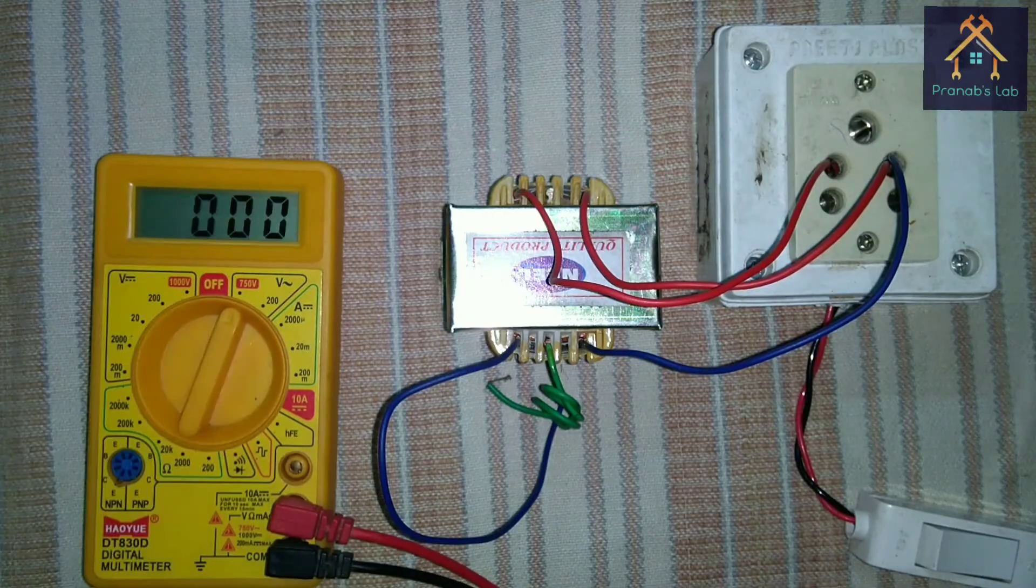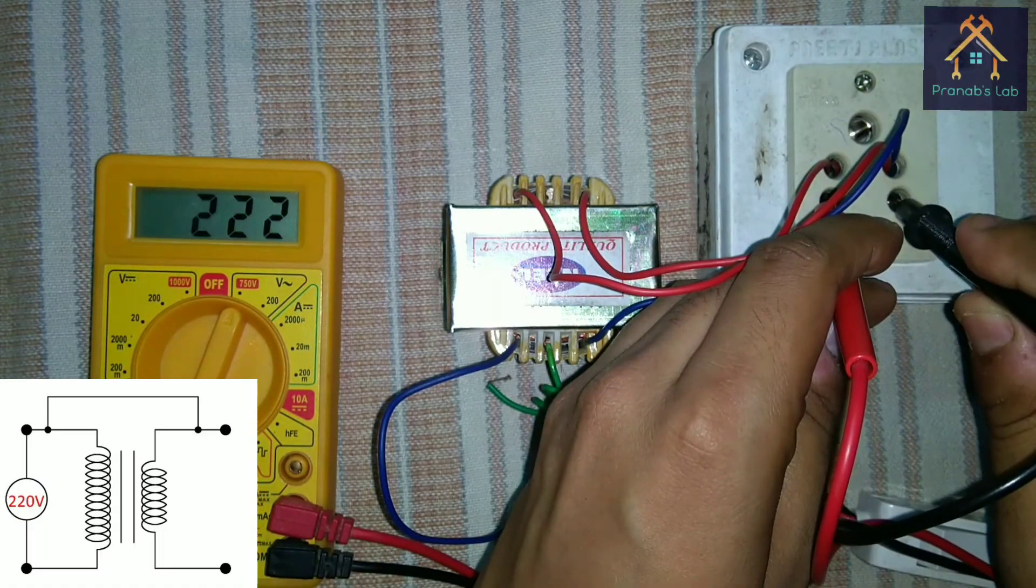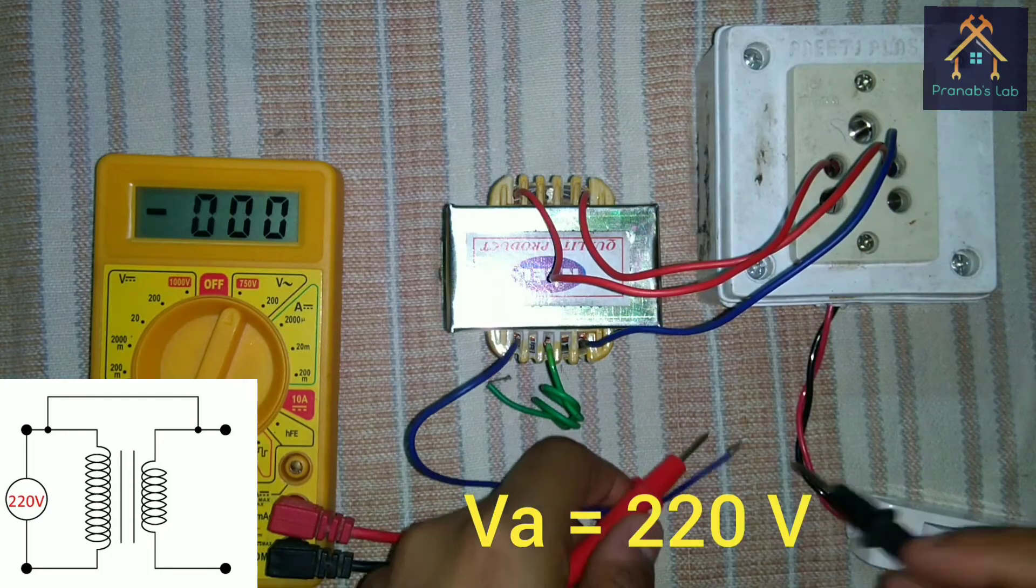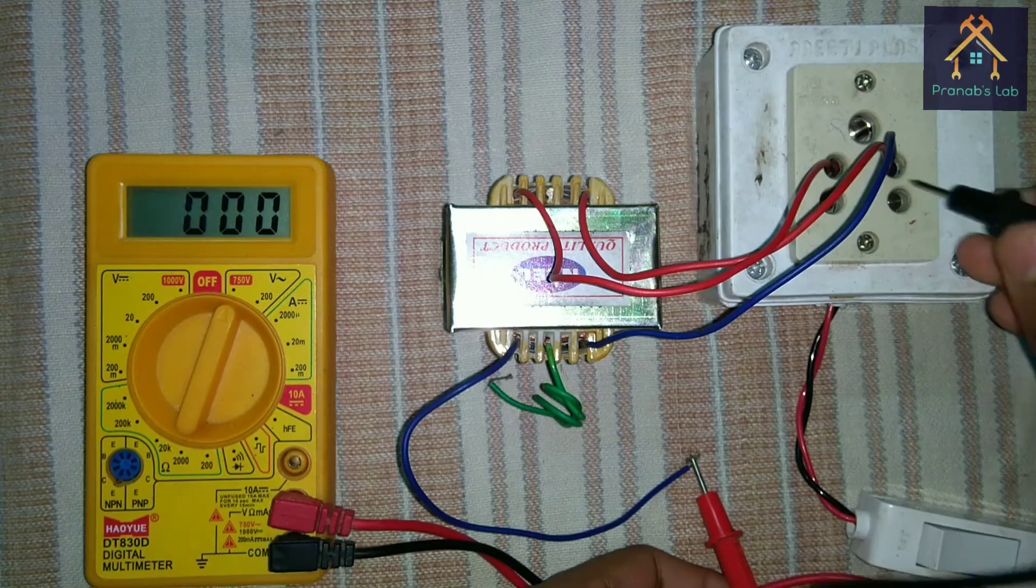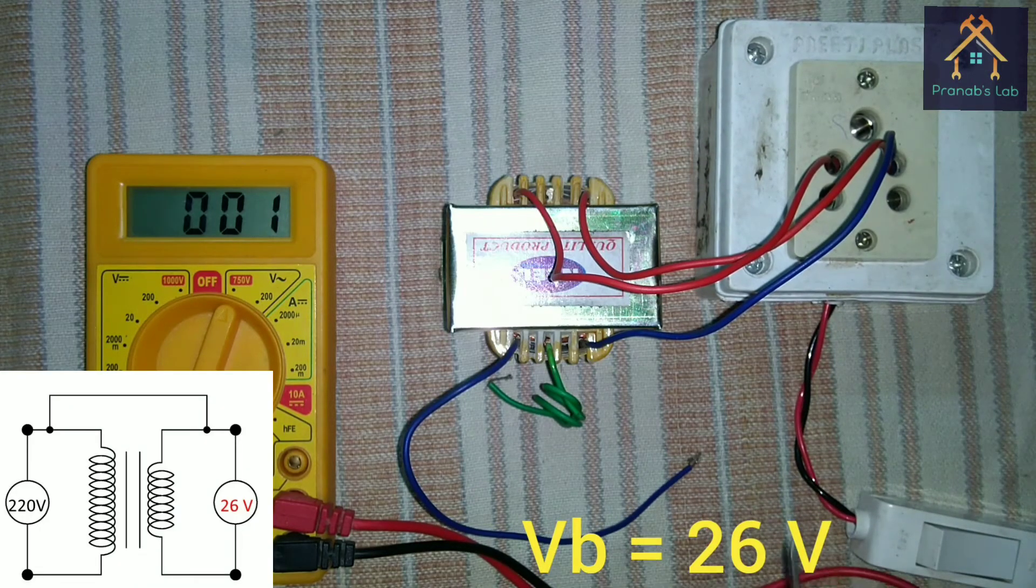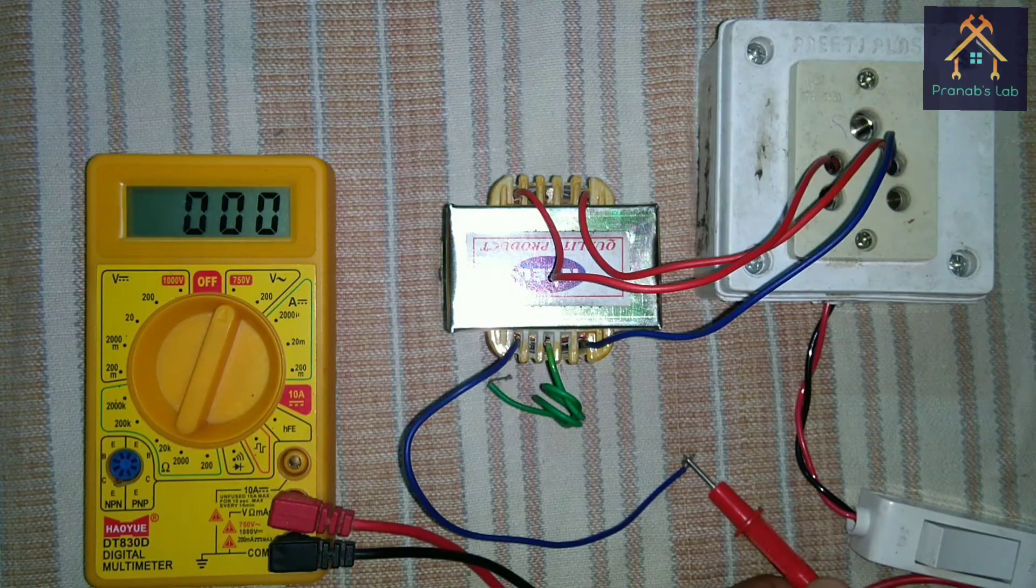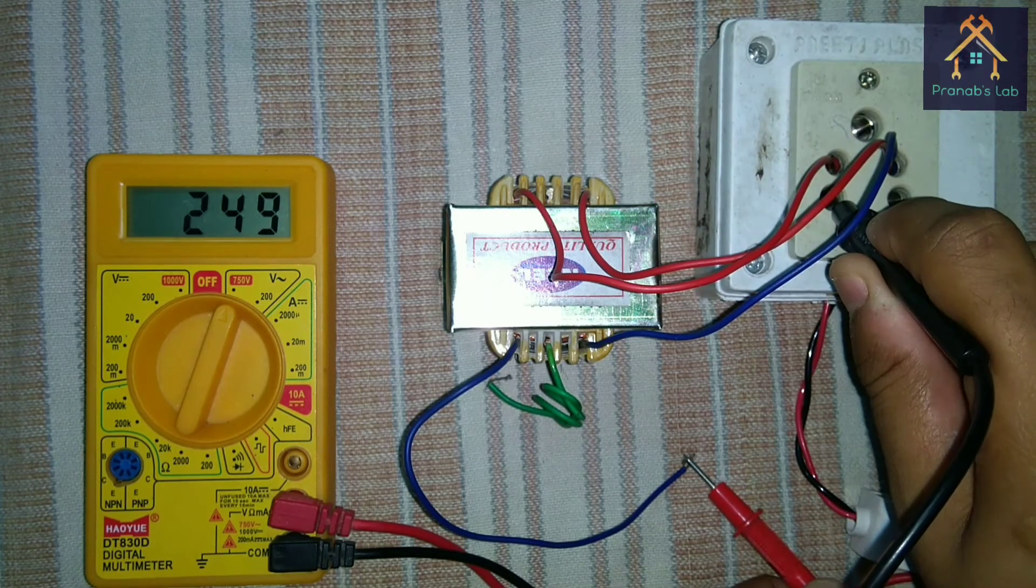Let's measure the primary voltage, that means VA, and it is 220V. And the secondary voltage, that means VB, is 26V. Now let's measure the resultant voltage, that means VC is 250V.